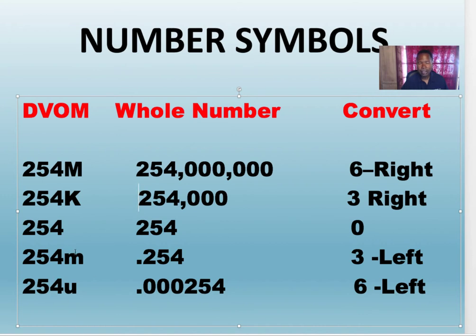254m, small m. Now you've got to move the decimal three places to the left. It's a small number. So now I'm reading point 254, three places to the left. So let's say that was an amp, that would be a little over two-tenths of an amp, or 254 milliamps.